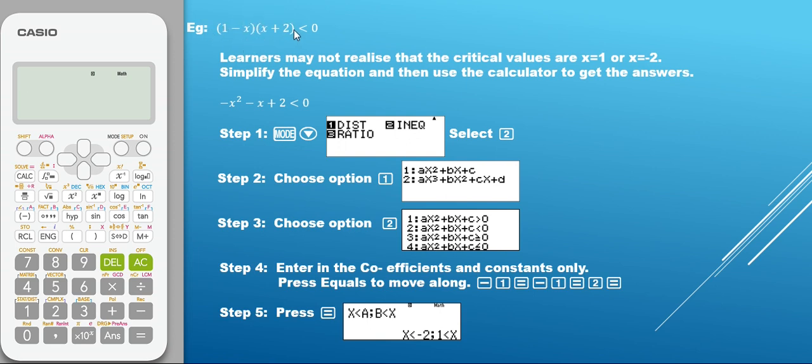Once I have multiplied out, I've got the answer of minus x squared minus x plus 2 is less than 0.